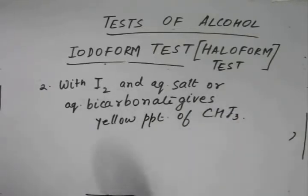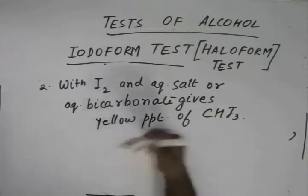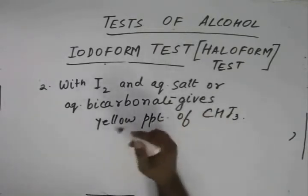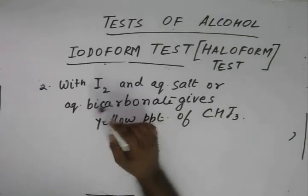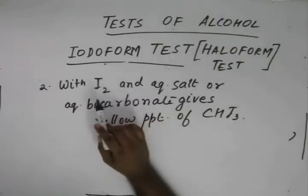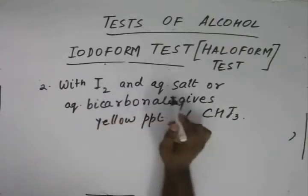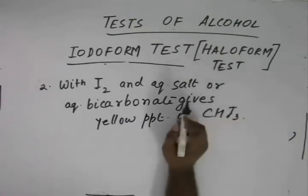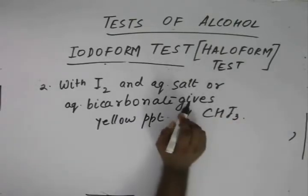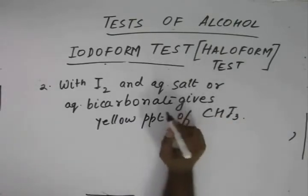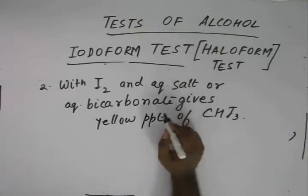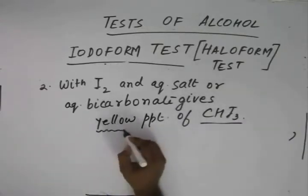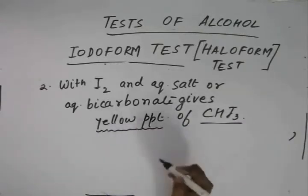When any alcohol with a terminal methyl group attached to it reacts with iodine in the presence of aqueous salt or bicarbonates, we get iodiform — a yellow precipitate of iodiform.